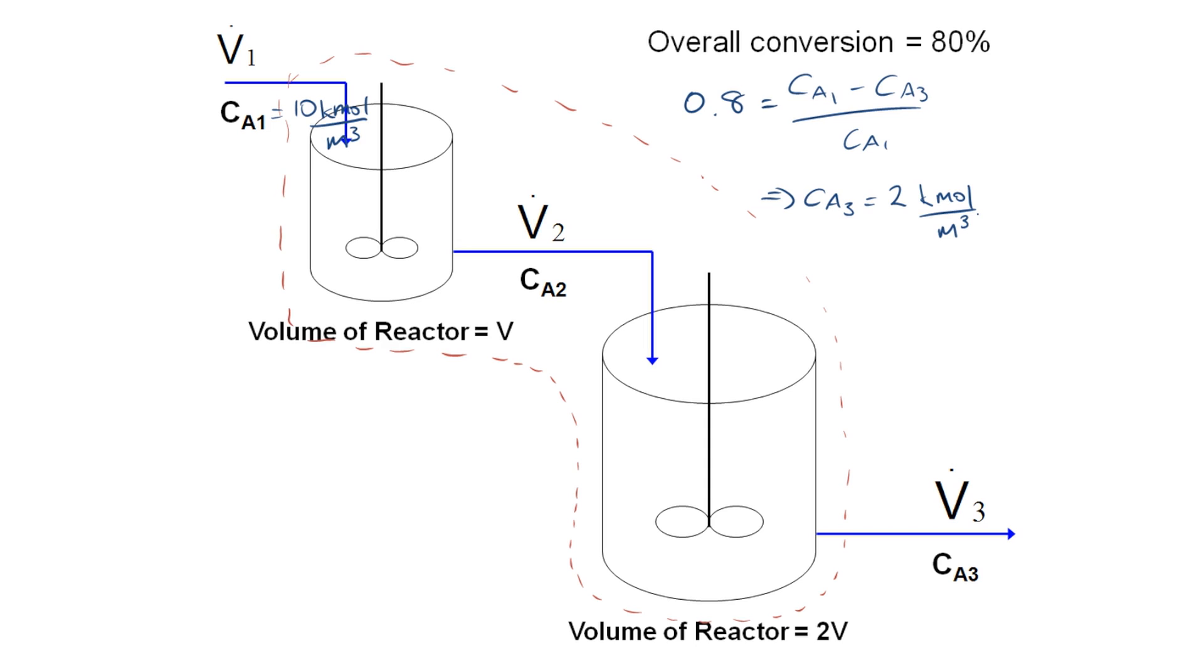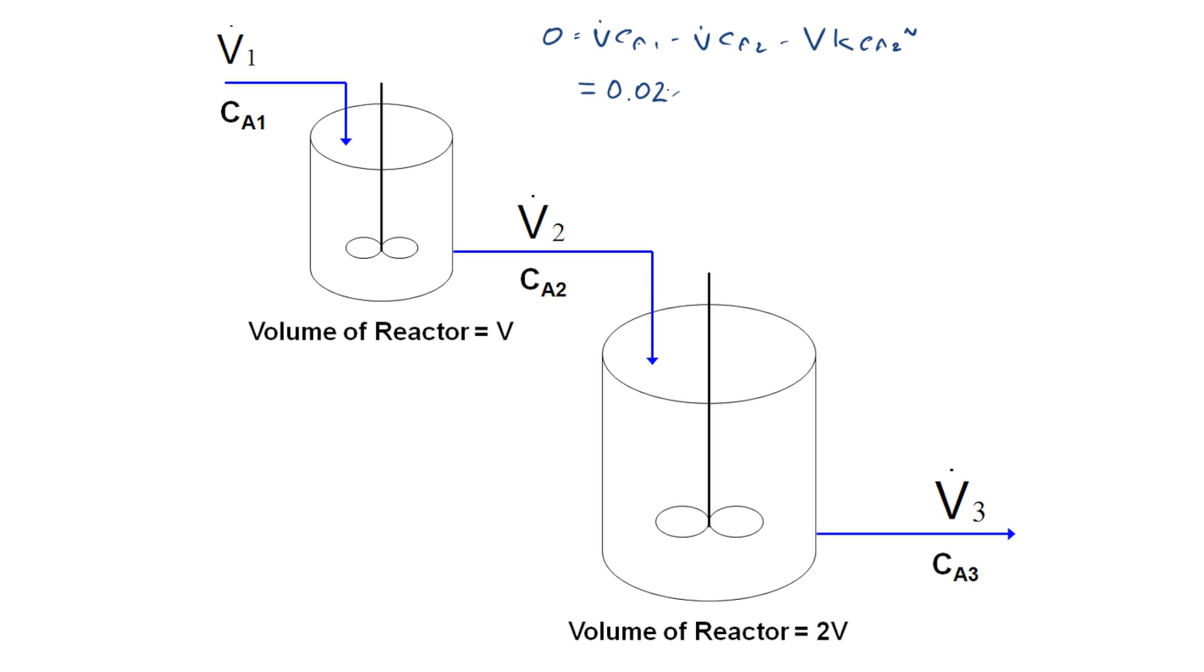So now we need to write our overall mass balance equations for the two CSTRs. So starting with our first CSTR, we write our general mass balance equation, which is that the flow in minus the flow out minus the disappearance term for A is equal to 0. Our flow in term is given by the volumetric flow rate, which we know is 0.02 m3 multiplied by 10, which is the concentration coming in, minus 0.02 times CA2. So we don't know at this point what the concentration at CA2 is, minus the volume of the reactor multiplied by our reaction rate constant, multiplied by CA2.